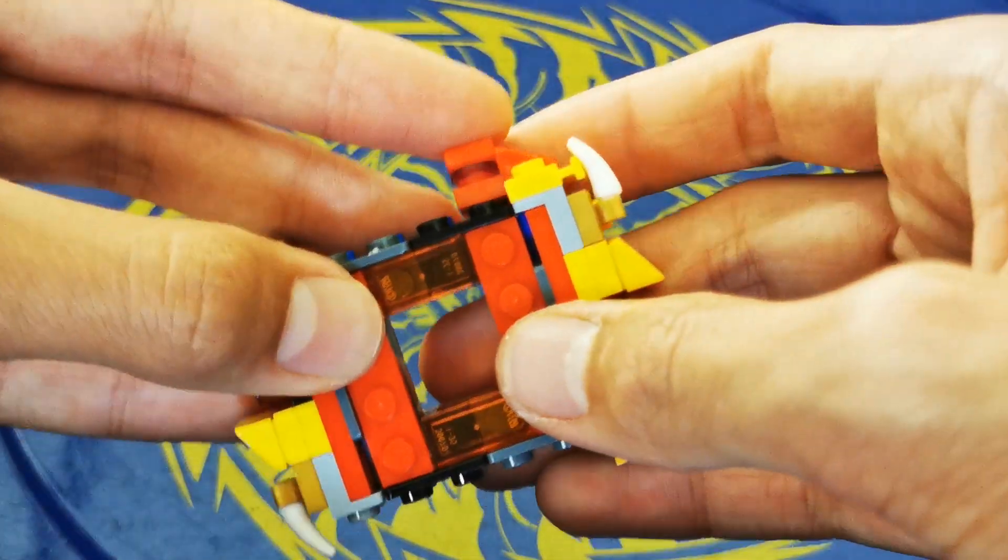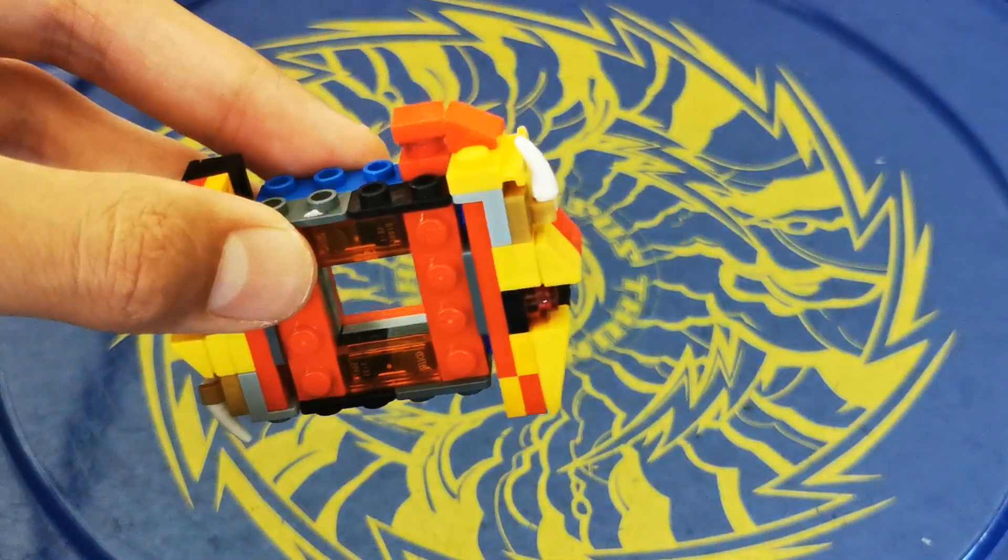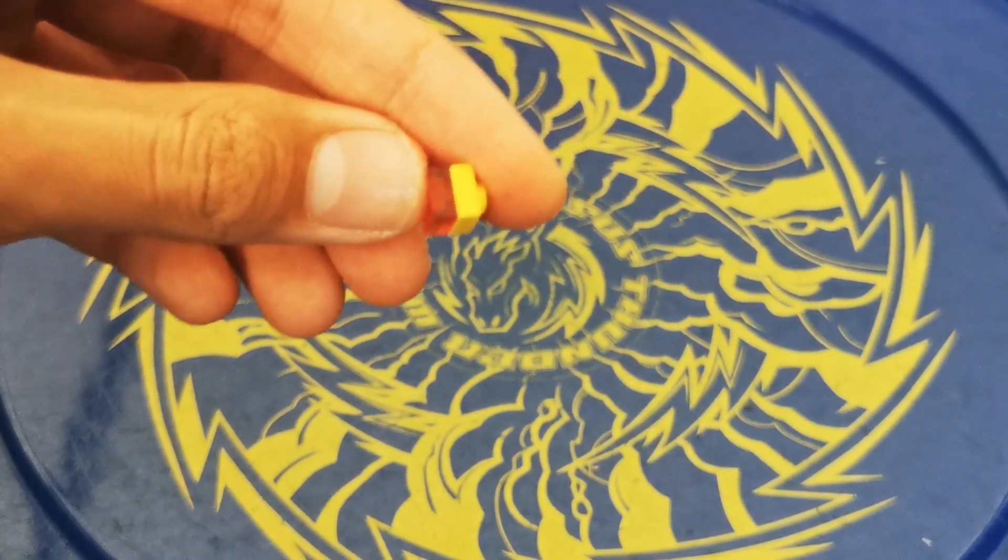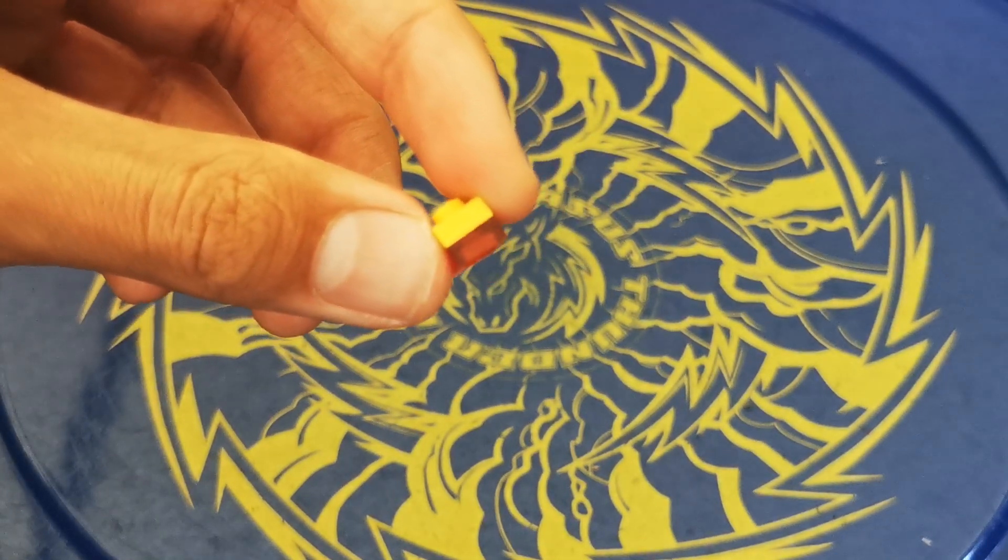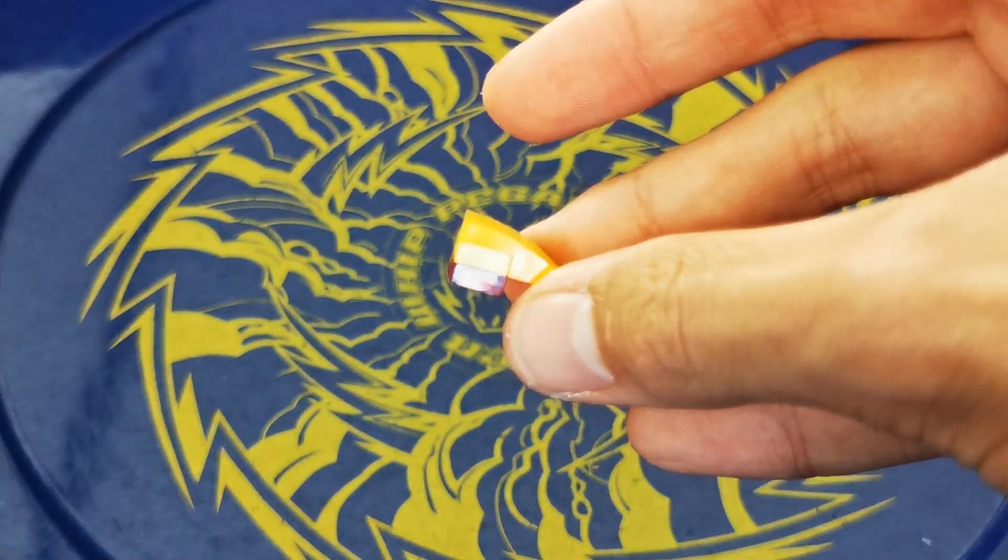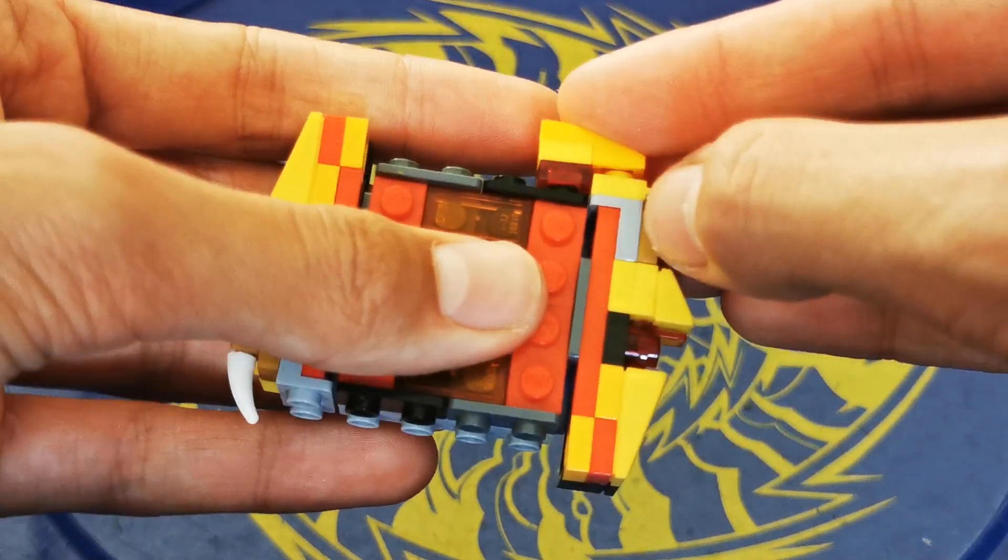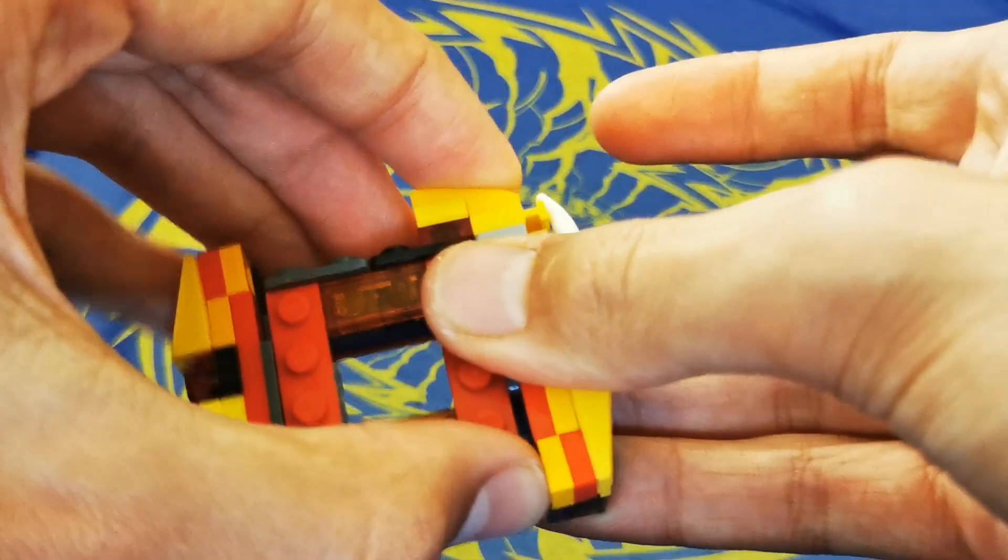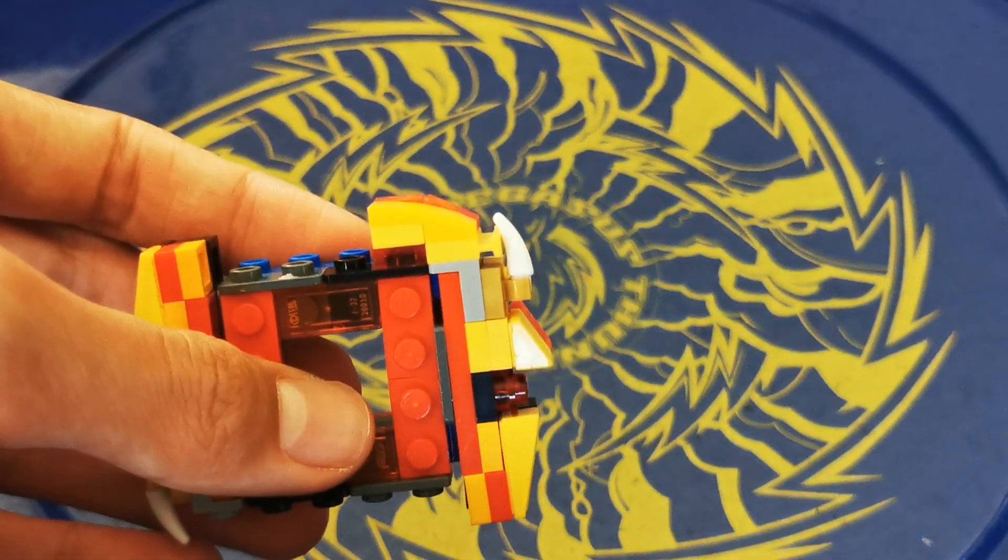And put that there behind the red cheese slope. Now stack a 1x1 square tile in see-through red and yellow. Grab this little curve piece and attach it there, and then clip this on here. Make sure the curve piece is in the flaring yellow, not normal yellow.